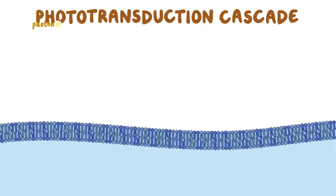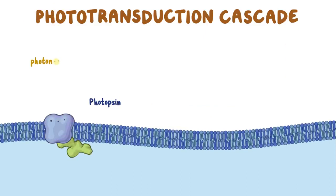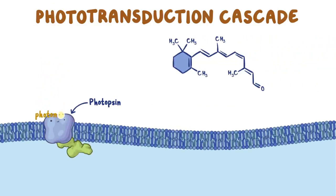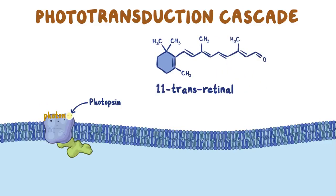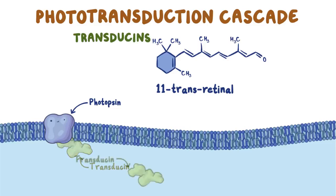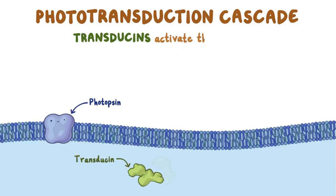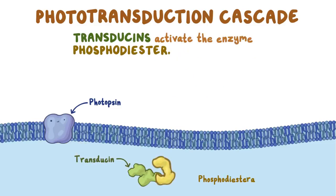When the opsin proteins, rhodopsin and photopsin, are struck by photons, a protein called retinol changes shape or isomerizes from 11-cis-retinol to 11-trans-retinol, creating a conformational change in the opsin proteins. That causes the opsin proteins to activate G-proteins called transducins, or GT, which in turn activate the enzyme phosphodiesterase.